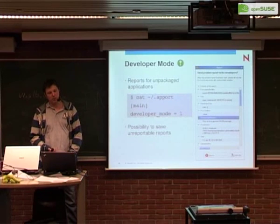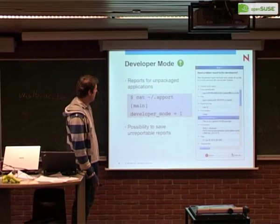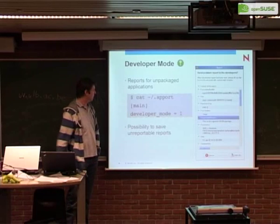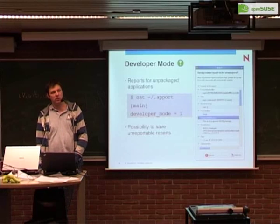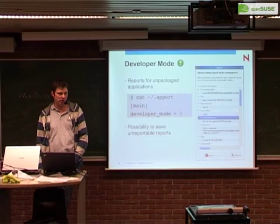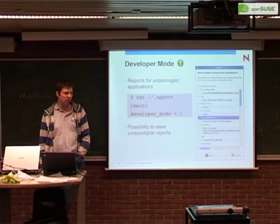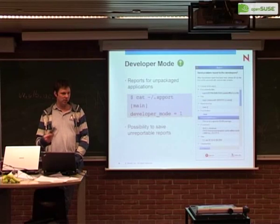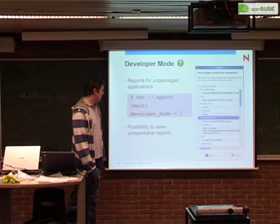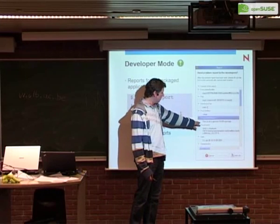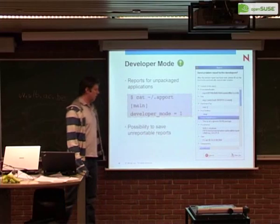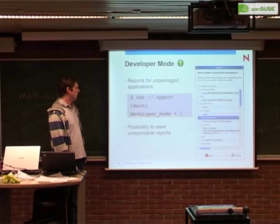There's something unique to the OpenSUSE version: developer mode. You can enable it in the config file by setting developer_mode to true. This generates backtraces and crash reports also for unpackaged applications — applications not officially signed by the OpenSUSE build key — and applications like a segfault test app that don't come with a package. You'll see an 'unreportable reason' tag saying 'this is not a genuine SUSE package,' so you can't send the report upstream, but you can save and view it.